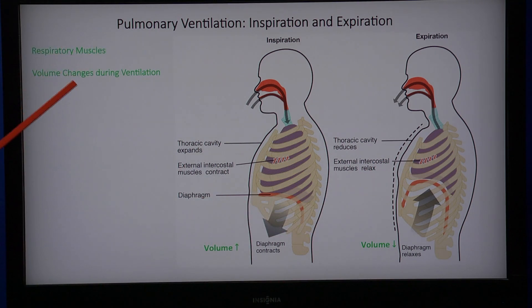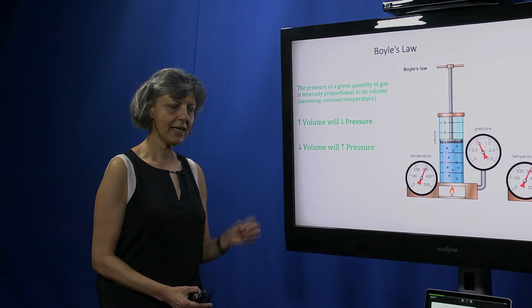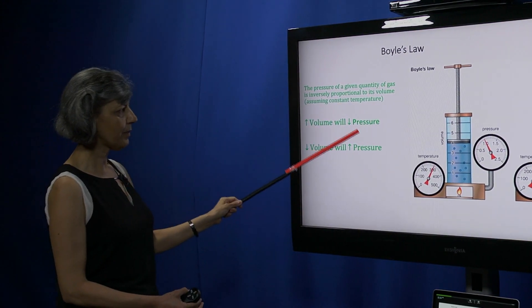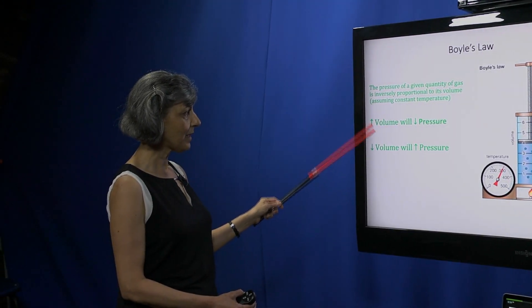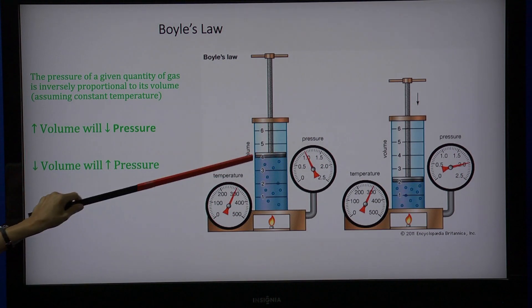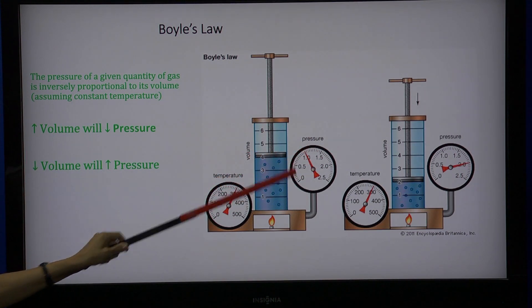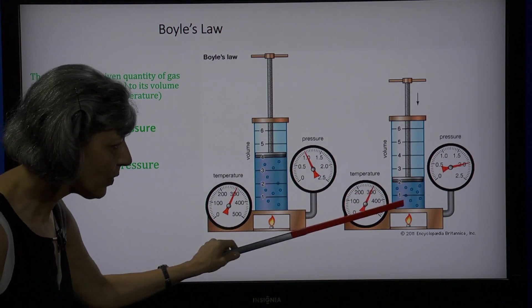How does this affect air actually going in and out? This is explained by Boyle's Law. Mr. Boyle noticed there is an inverse relationship between the volume and the pressure, as long as the temperature is constant. Once you increase the volume, you decrease the pressure. If you decrease the volume, you increase the pressure.